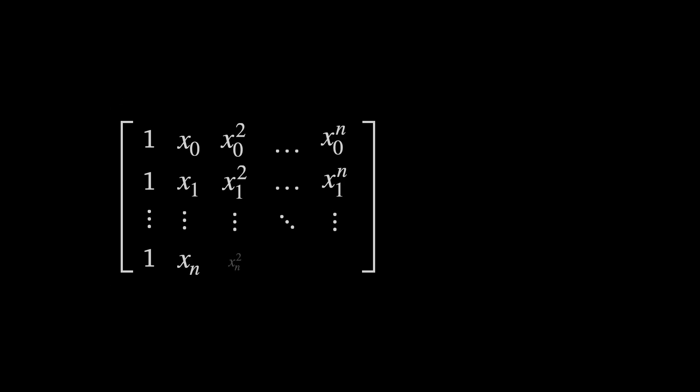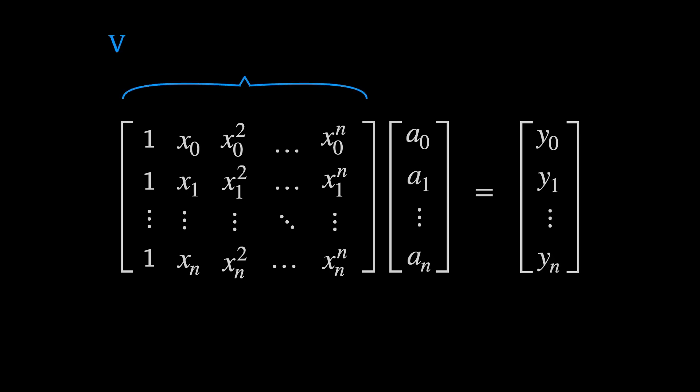We can therefore rewrite the set of equations as a matrix equation. This matrix is the Vandermonde matrix and it has the interesting property that each row contains x sub i raised to increasing powers as we move to the right. We have vector capital A which contains the coefficients we want to calculate and then a vector capital Y containing the known y values at the nodes. We can now find capital A by multiplying capital Y by the inverse of the Vandermonde matrix.